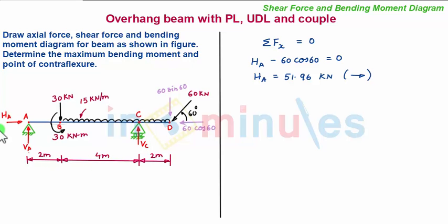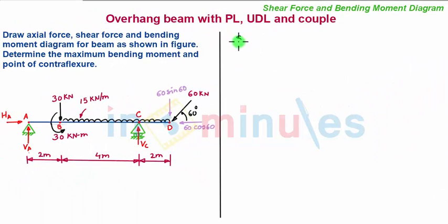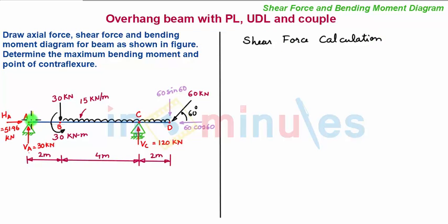Now since all the support reactions have been found, let's move towards finding the axial force, shear force, and bending moment diagram. We start with shear force calculation — we first take a section towards the left-hand support and move towards the right. Our first section will be taken towards the right of A and very near to it.